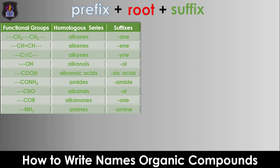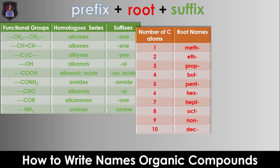The root is obtained from the number of carbon atoms present in the longest parent chain of the molecule. The root names are: meth for one carbon, eth for two carbon atoms, prop for three carbon atoms, and but for four carbon atoms. From five to ten carbon atoms, we use the pattern for naming polygons — that is pent, hex, hept, oct, and so on.